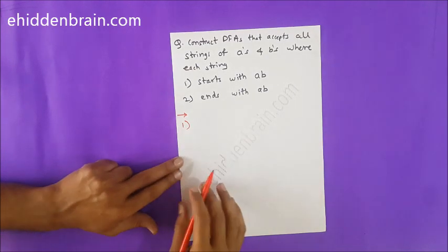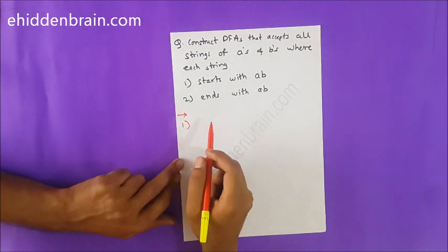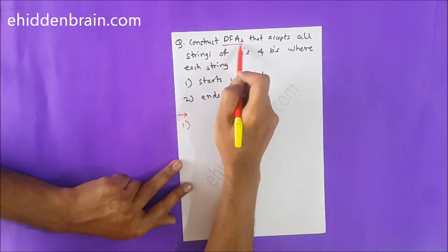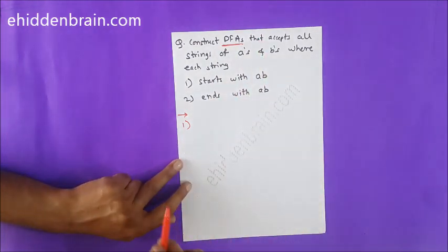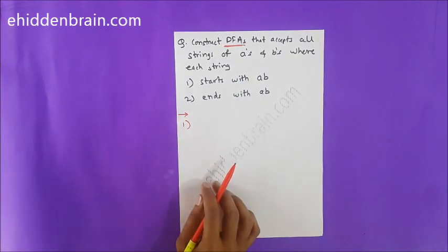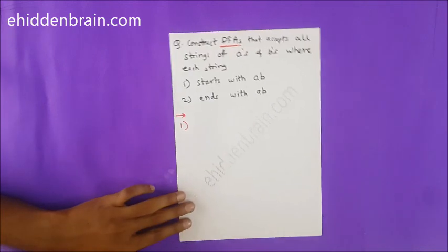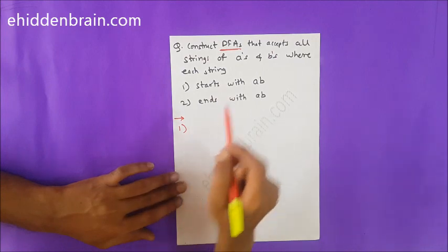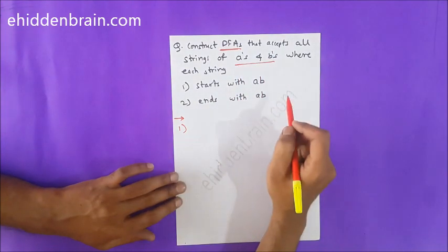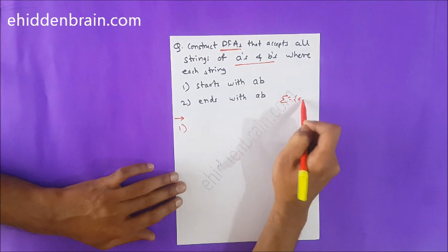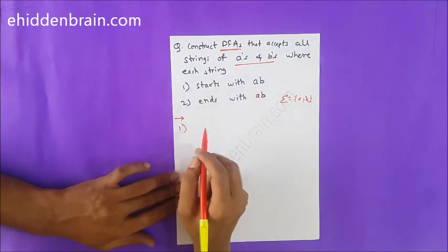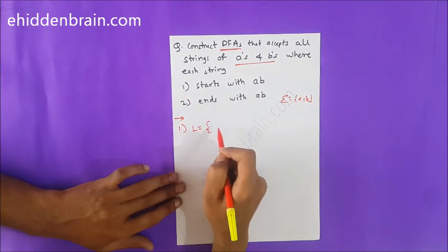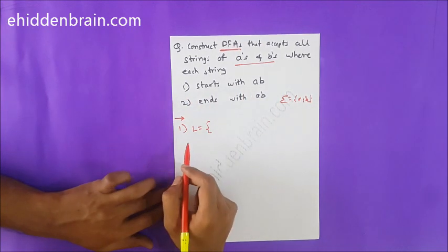Let's try to find the answer for the first question. When they say construct a DFA, it is always a minimal DFA — you should always try to find a DFA with the least number of states. The input alphabets are A's and B's, so the alphabet set is {A, B}. Now the language for the first question starts with AB.